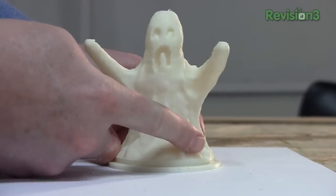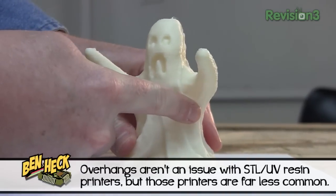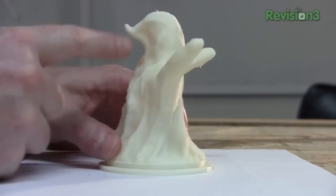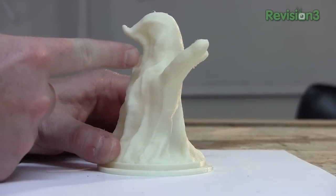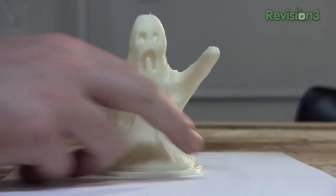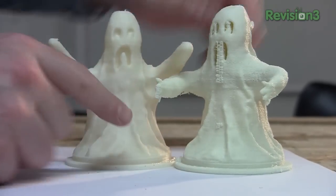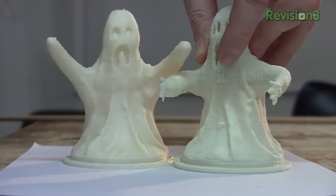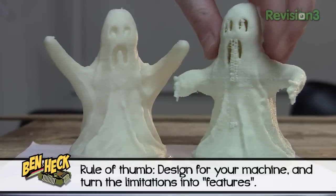3D slicing software can automatically include support structure, very much like scaffolding on a building, but this can be a pain to remove and also increases print time. When possible, prevent overhangs ahead of time in your design. This original 3D printed ghost had outstretched arms, which required supports and increased the print time of the build, as well as the cleanup time. Areas like the mouth here ended up getting messy support material, even though it didn't need it.